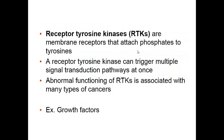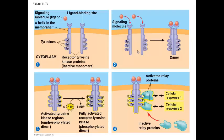The second type of receptor is called the receptor tyrosine kinase. The receptor tyrosine kinase responds to ligands like the growth factor, so the pathways associated with these receptors trigger responses like cell division. Malfunctioning of RTKs is often associated with different types of cancer. The receptor tyrosine kinase is a dimer — a protein made up of two polypeptide subunits. When the ligand binds, it causes phosphorylation of relay proteins using ATP.